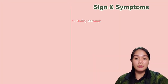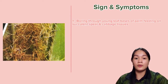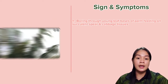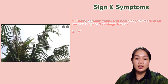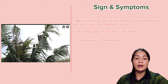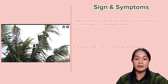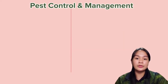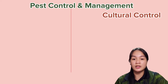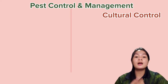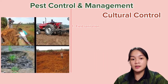The symptoms are visible as damage caused by boring through young leaf pests of palm, feeding on succulent spear and cabbage tissue, resulting in V-shaped gaps in the leaf silhouette and triangular cuts on leaves. The pest can also cause secondary infection by fungi and bacteria.